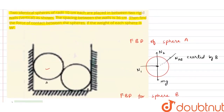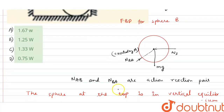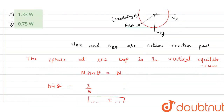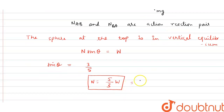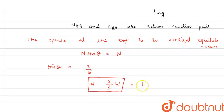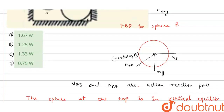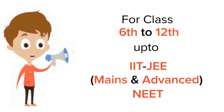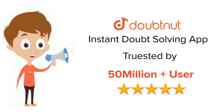Solving 5/3 w, we get 1.666..., which we write as 1.67w. So the correct answer is 1.67w — option A is the correct option. For class 6 to 12, IIT JEE and NEET level, trusted by more than 5 crore students — download the Doubtnut app today.